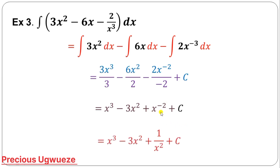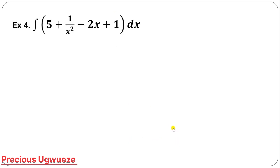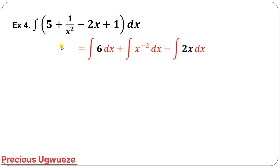You can convert the result back into a fraction form as it was given in the question. Using the power rule in indices, the negative power becomes a reciprocal. For Example 4, I first add the constant — 5 plus 1 gives 6 — then change the other term into index form. So we have the integral of 6 plus the index form, minus the remaining term.